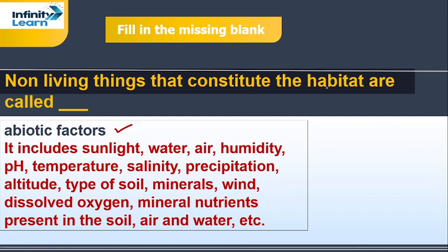They are included in the abiotic factors because they are all non-living. So the correct answer is abiotic factors — the non-living things that constitute the habitat are called abiotic factors, including sunlight, water, air, humidity, pH, and temperature. I hope you understood.